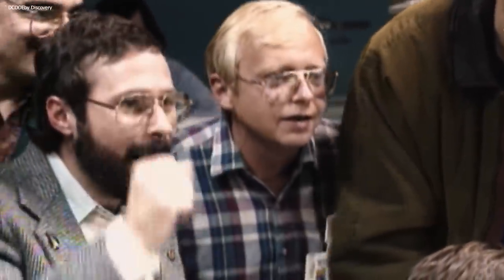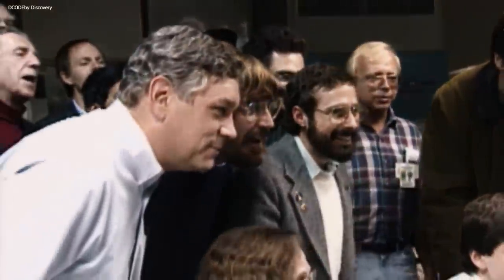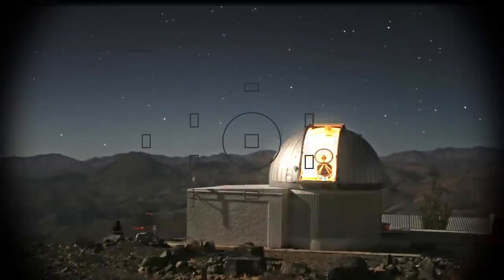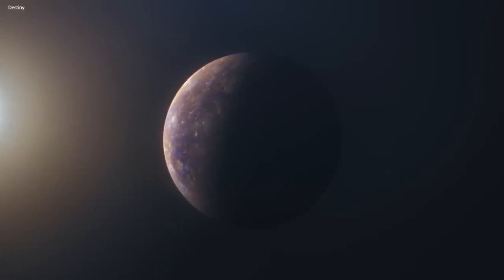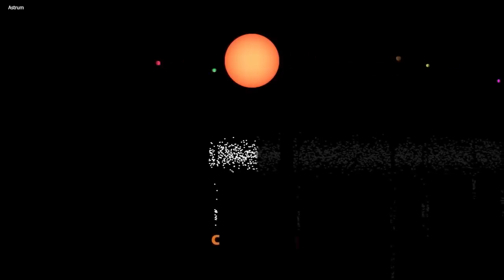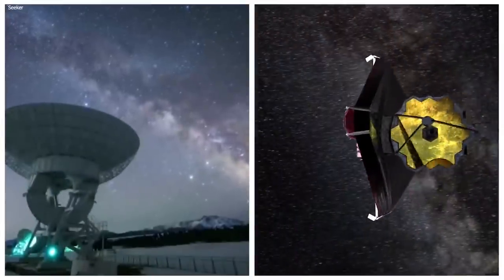The way TRAPPIST-1b was discovered is quite a fascinating story, too. A team of astronomers, peering through the lens of the Transiting Planets and Planetesimals Small Telescope, or TRAPPIST for short, based in Chile, first spotted it in 2016. This was also made possible with the help of several other ground and space-based telescopes.